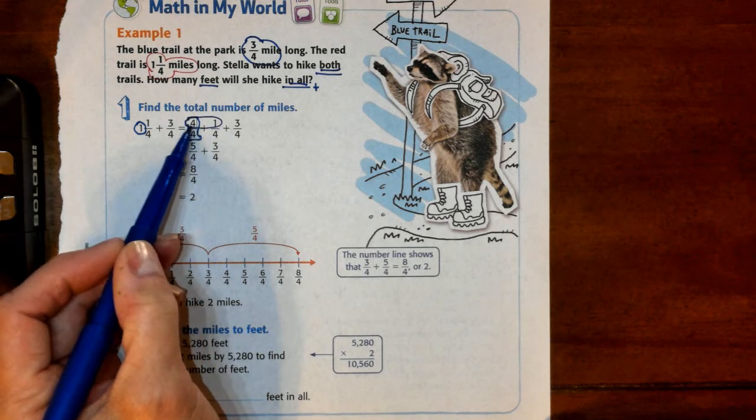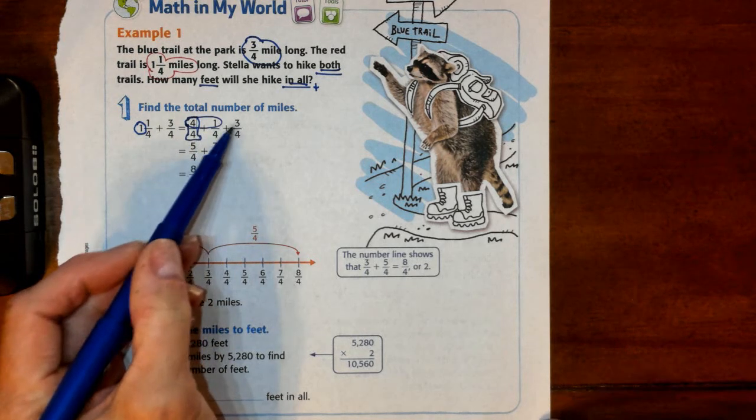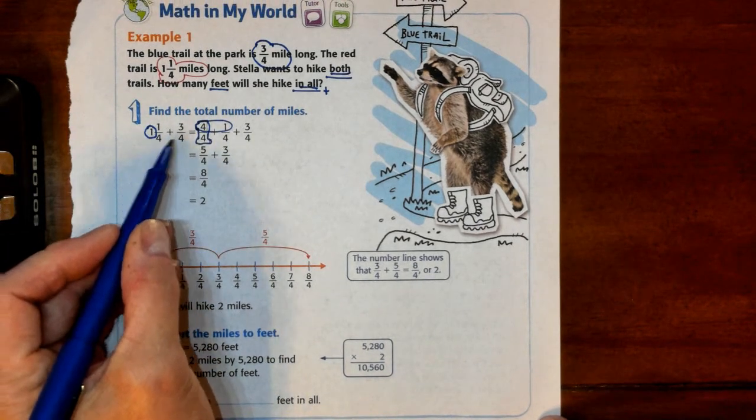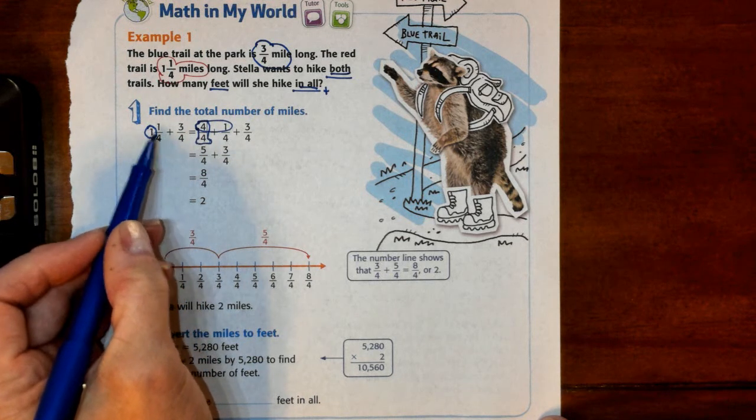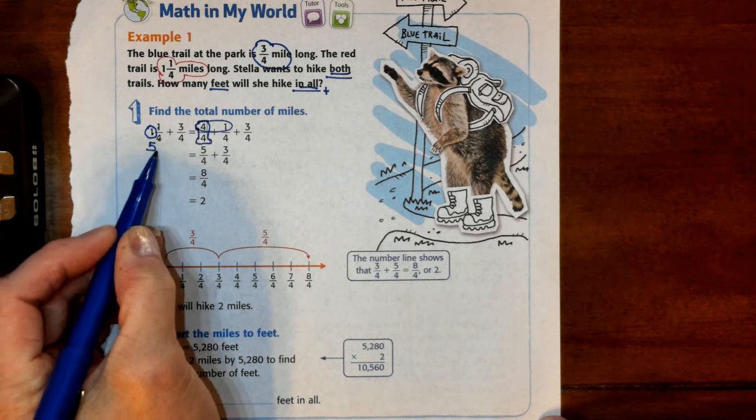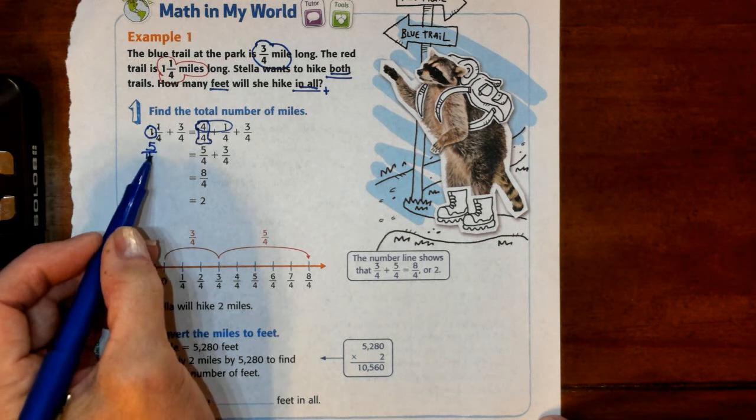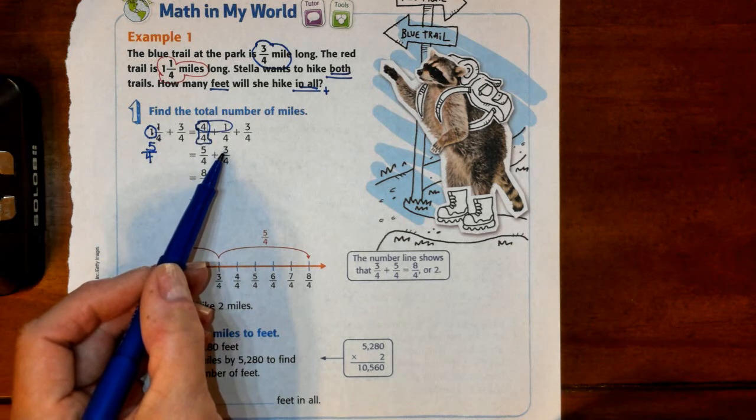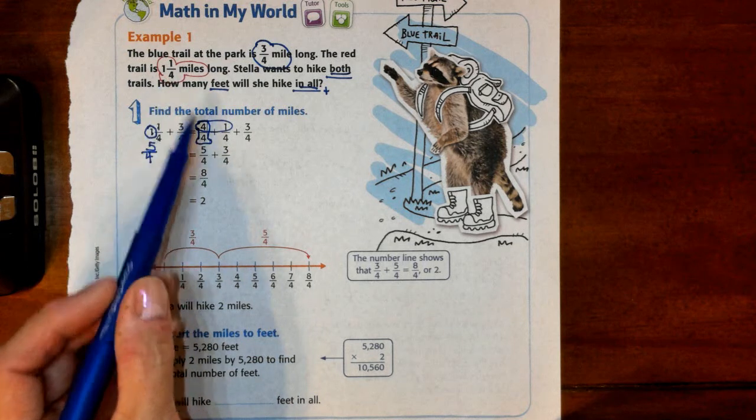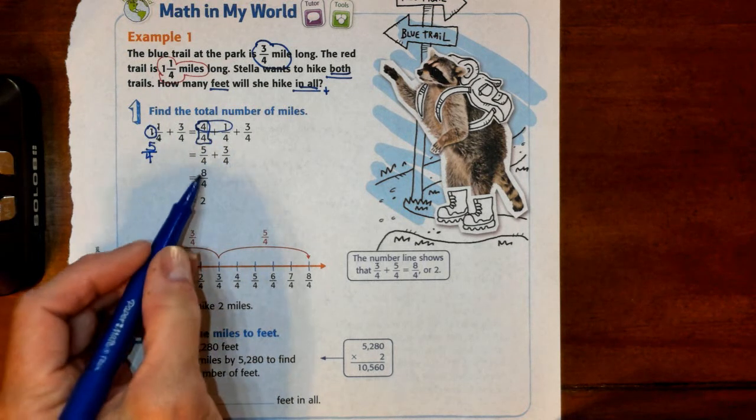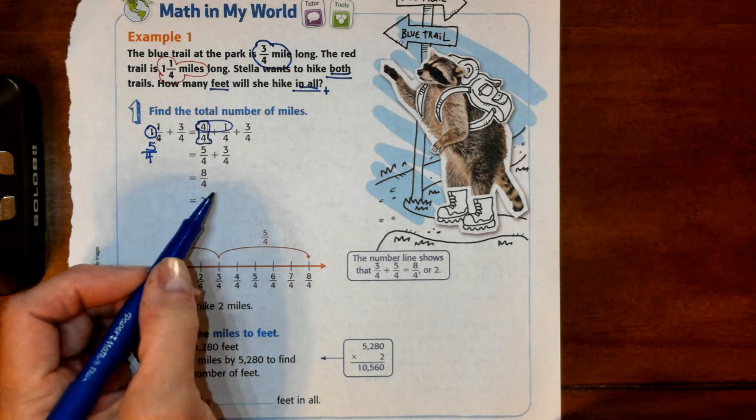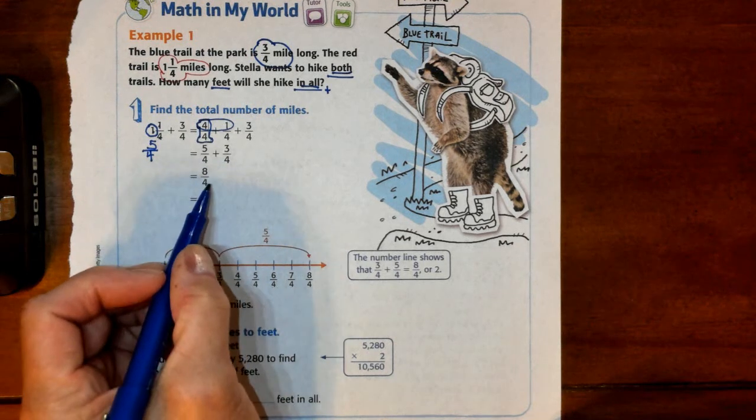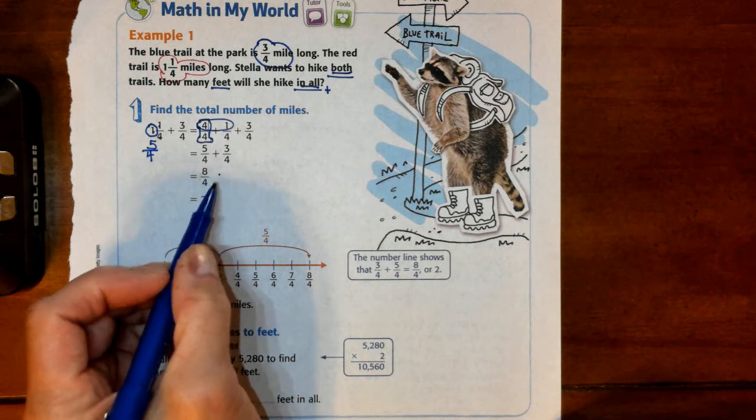Now in this step they've combined these guys to give us five-fourths plus three-fourths. If you wanted to just convert this to an improper fraction, you could have said 4 times 1 is 4 plus 1 more is 5, and you would have known instantly that that was five-fourths. Now that we're here, we've got five-fourths which is the red trail and three-fourths which is the blue trail. We combine those to get eight-fourths, and based on our past work with fractions, we know it can't stay improper. So we divide 4 into 8 and that gets us to 2.